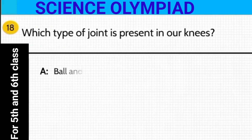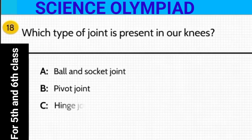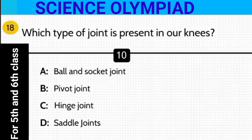Which type of joint is present in our knees? Is it a ball and socket joint, pivot joint, hinge joint, or saddle joint?